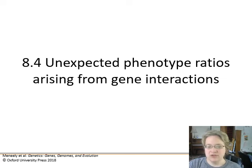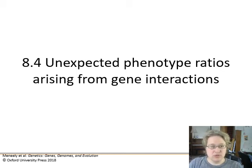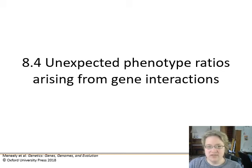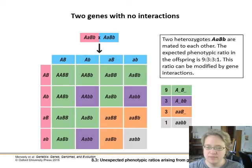Now we're going to get into where we have multiple genes, and the expression of one gene is going to affect the expression of the other. Maybe they're part of a biochemical pathway — one's the first step, the second step, or even the third step. This is going to change what the final possible phenotypes are when we look at our Punnett square, and we're going to deviate away from that 9:3:3:1 ratio we saw before.